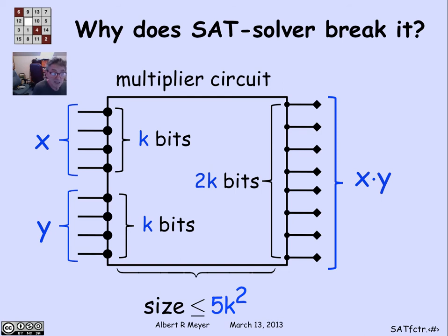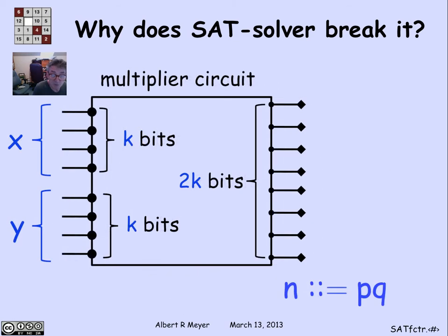It's easy enough to design one of these things where the size is literally bounded by 5 times k squared, maybe plus a constant. So this is definitely a small polynomial. Given the number of bits we're working with, it's easy enough to build this multiplier circuit. Now suppose that I have a way to test satisfiability of circuits — how am I going to use this multiplier circuit to factor?